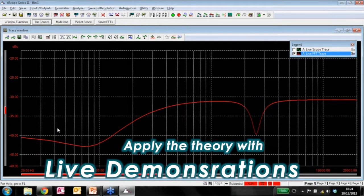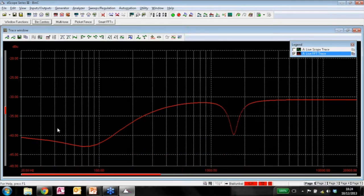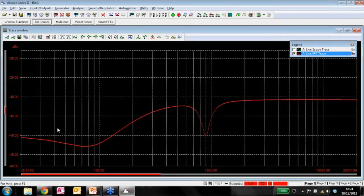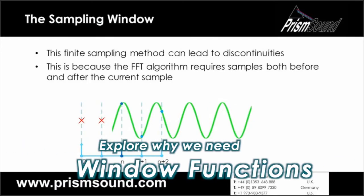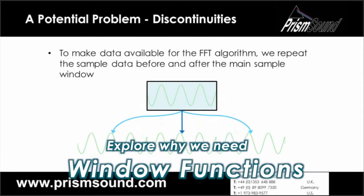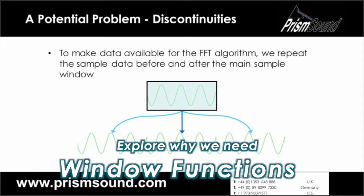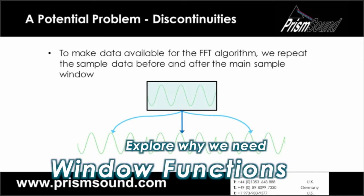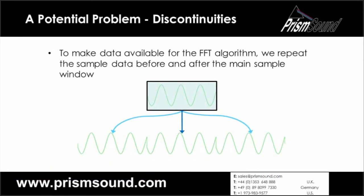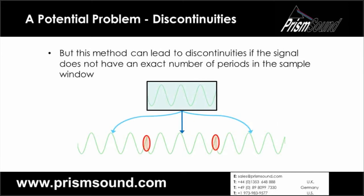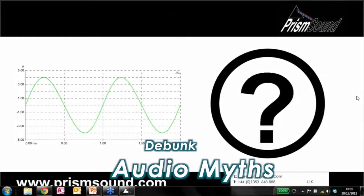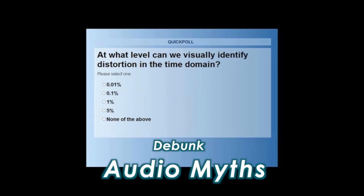So the bin center's frequency response is a very good technique if you've got something. What we do to get around this is we effectively repeat the data before and after our actual sample window to simulate having real data there. But this can lead to a discontinuity signal that we can visually identify as distortion in the time domain.